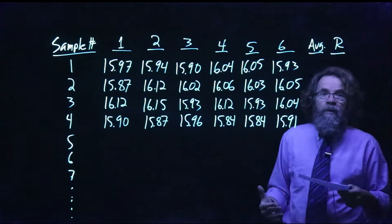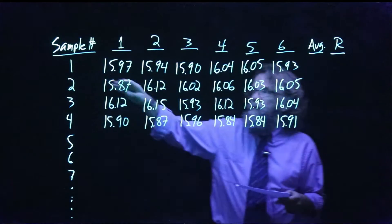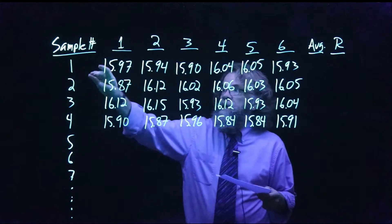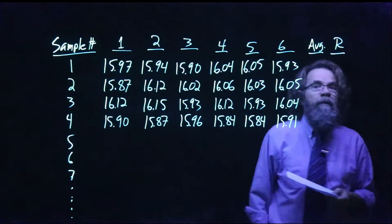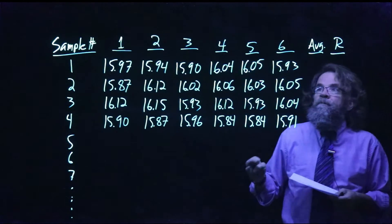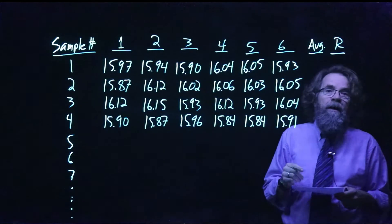So what I've got on the screen here is I've gone out and collected samples one, two, three, four times, and obviously that's going to just keep on going forever. But each time I collect data, I'm collecting six readings: one, two, three, four, five, six.